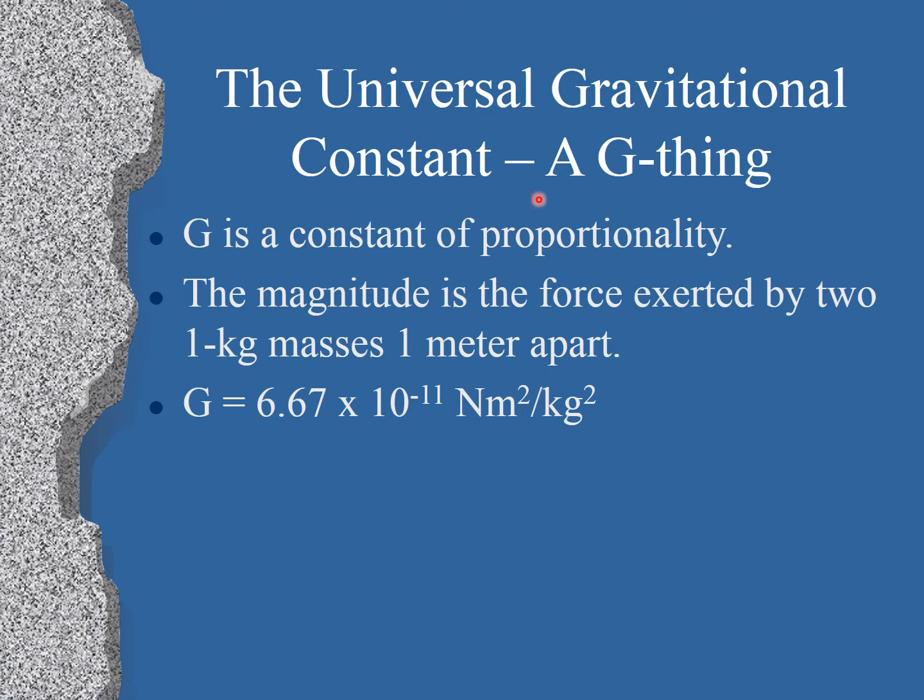The universal gravitational constant is the constant of proportionality in the equation that we just saw. The magnitude is the force exerted by two one kilogram masses apart. The constant here is 6.67 times 10 to the negative 11, and the units are newtons times meters squared per kilogram squared.